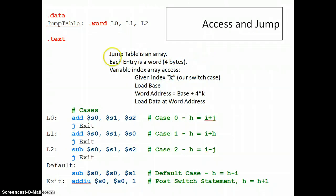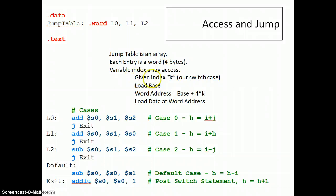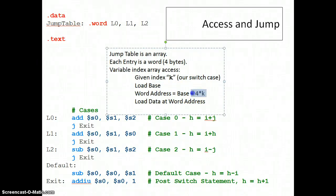And then finally, I want to do an access and jump. Remember that a jump table is an array. We did array access. Each entry in an array is a word, four bytes. In this case, we want to do a variable index array access. So given our K, which is our switch case variable, we have to load the base, which is the starting address of jump table, and we have to calculate our word address by hand. Because when we load data at a word address, we can't use an offset because it's a variable index. We can't use a fixed offset. We have to use a constant offset of zero and calculate the word address by hand. This is exactly what we do when we're using a fixed offset, except we're calculating the four times K online. We have to do it in the program.